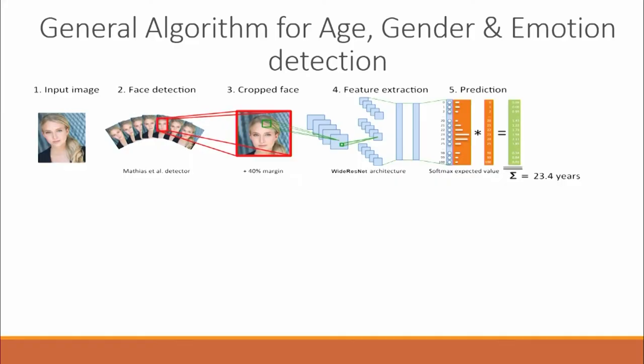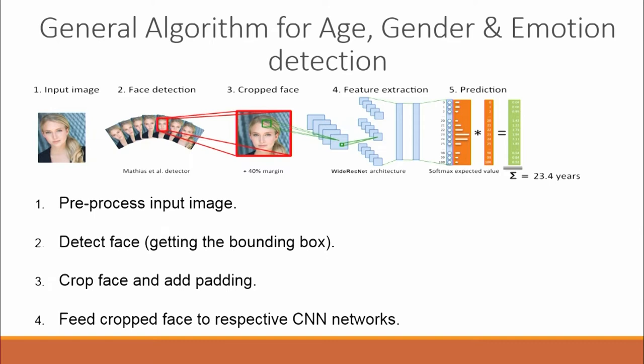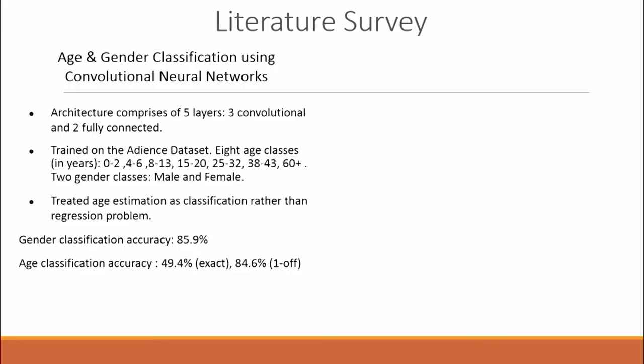Our task was to extract relevant information from the video, and the tags we identified were age, gender, and emotion. Our general algorithm for extracting these tags: first, we pre-processed the image; then we applied a face detection algorithm, cropped the face, and added a bounding box; and the last step was to feed it to a CNN network. Training a CNN model requires a lot of computational power and a very clean dataset, so we did a literature survey to evaluate existing models. The first model we examined was age and gender classification using CNNs — it had five layers, three CNNs and two fully connected layers.